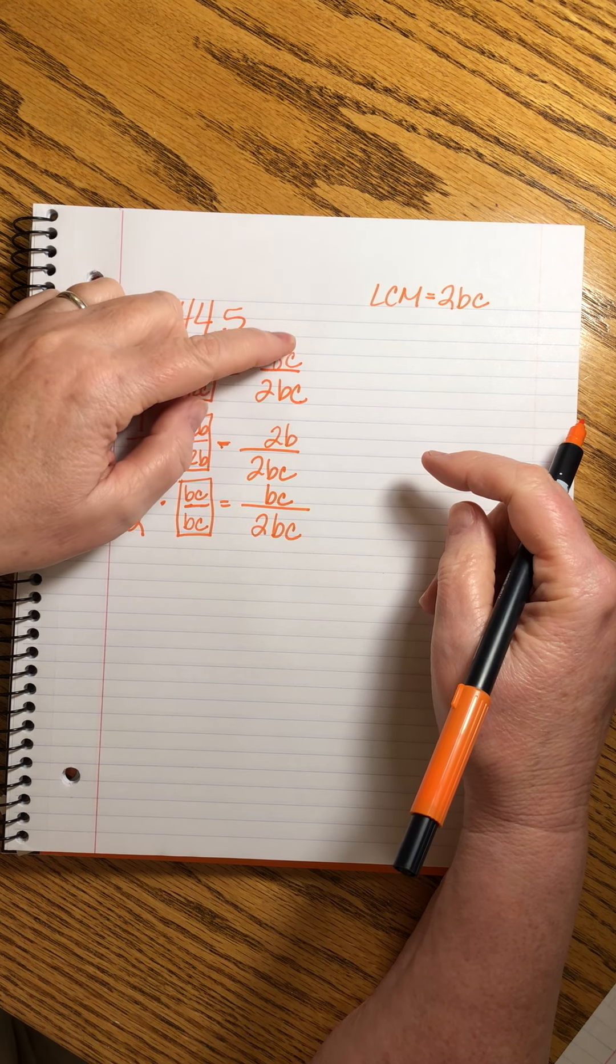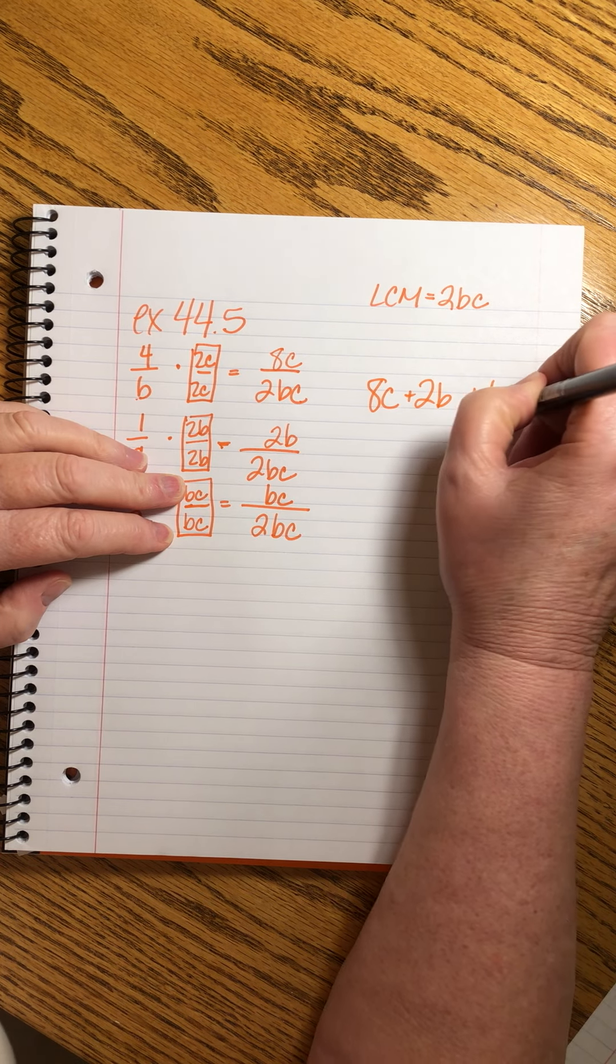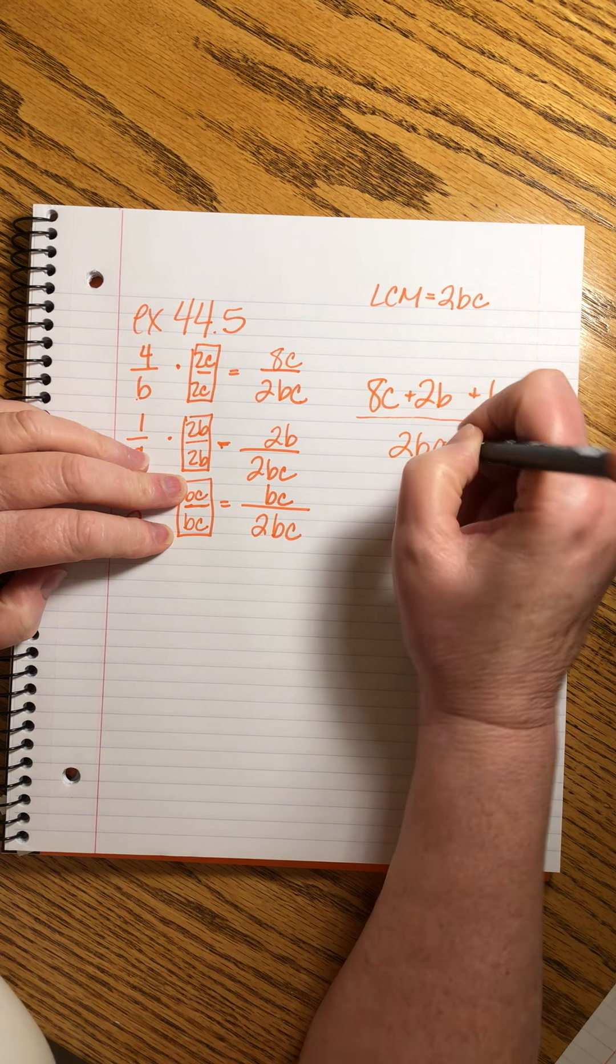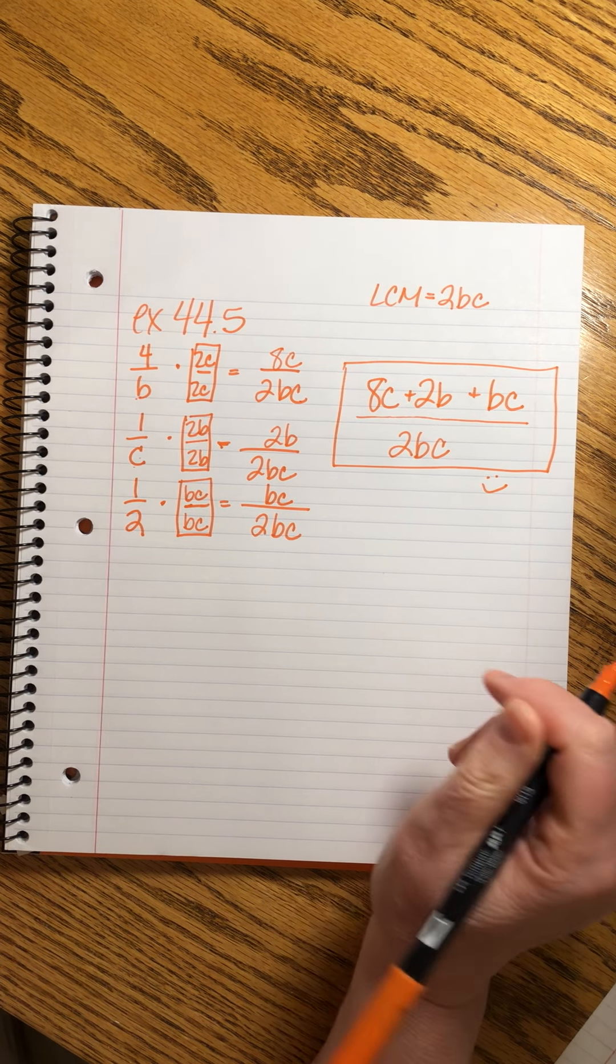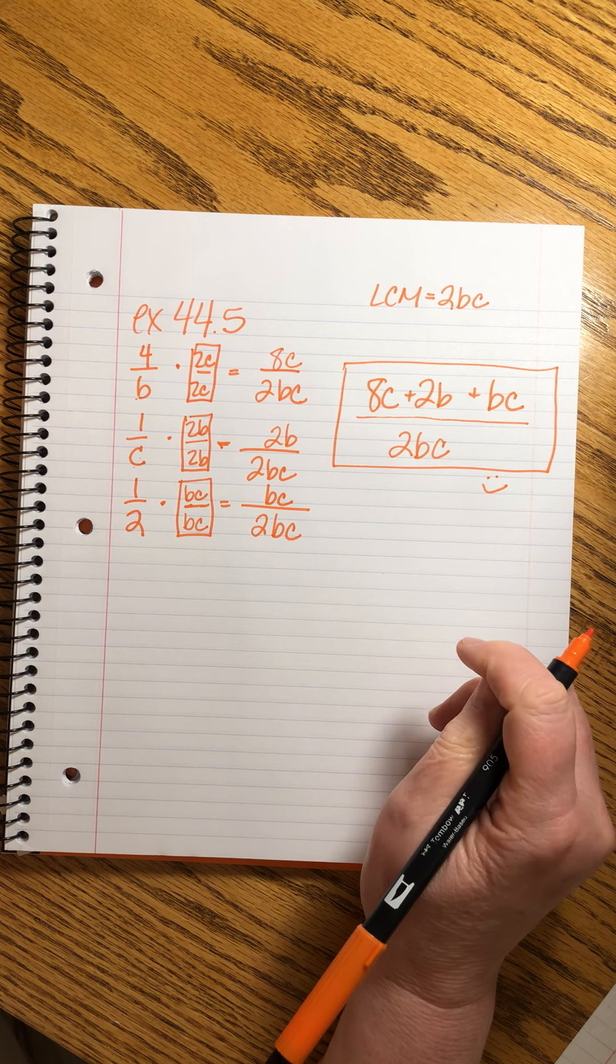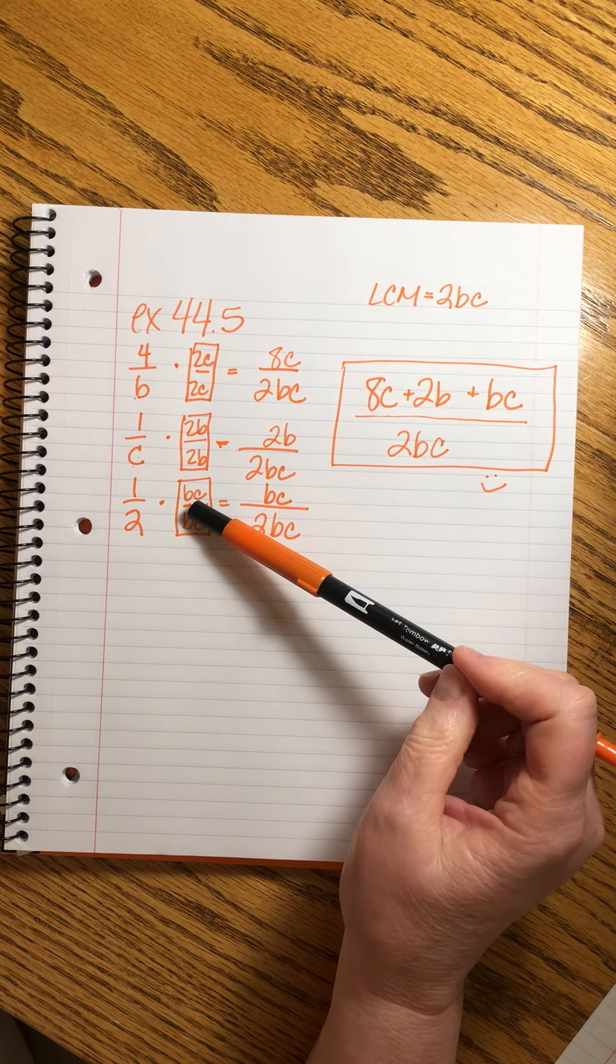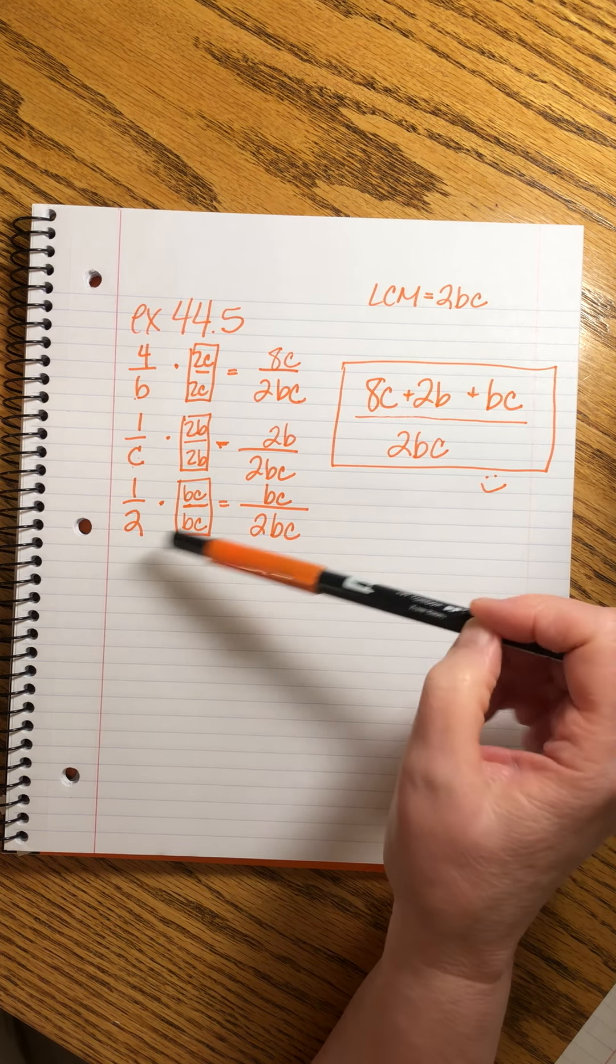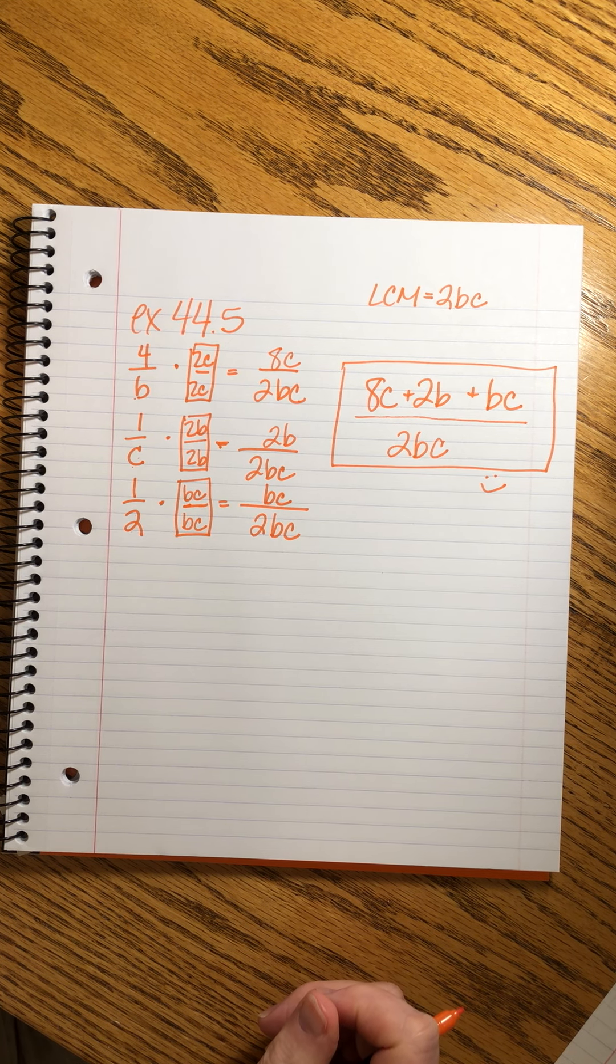Writing this out is super helpful because it makes it super easy for you to see what the missing pieces are. Here, we'll need 2C over 2C in order to get the B to turn into that. And then the numerator becomes 8C. Here, to get from here to here, we'll need a 2B and a 2B. And 2, we need to multiply by BC. So for our final answer, we can add all the numerators. There's no like terms. So we can simply write our answer 8C plus 2B plus BC all over 2BC. Please use this format for adding fractions.